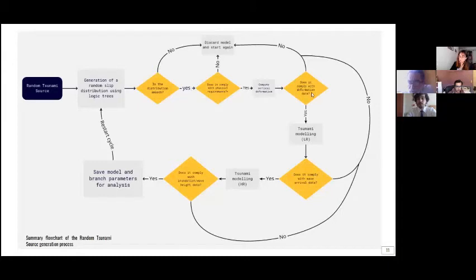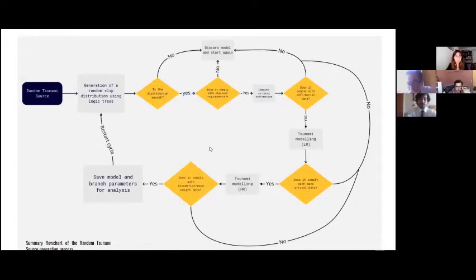Does this vertical deformation comply with deformation data that we have? If it does, we model a low resolution tsunami. We test if it complies with wave arrival data. If it does, we model them as high resolution tsunami model to test if it complies with inundation and wave height data. In each one of these steps, if it doesn't comply with data or empirical relation or physical requirements, we discard the model and start again. However, if it passes all these filters, we save the model, save the branch parameters and start analysis. This process is made for each and every one of the combinations of the logic tree.